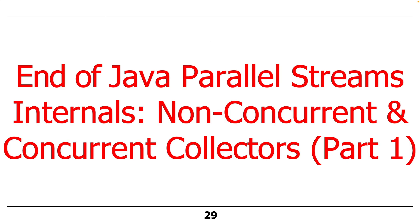So that was a quick overview of the structure and functionality differences between non-concurrent and concurrent collectors. The most important thing to remember is that concurrent collectors only have one mutable result container, which must be thread-safe and synchronized.